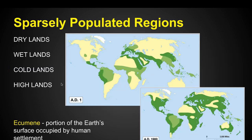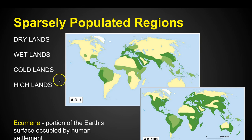Sparsely populated regions where people don't live: typically people don't want to live in areas that are dry like a desert, or in wet places like the marshlands down in Florida — you just can't build a house there. You don't want to live in areas that are cold because you can't grow crops, and you don't want to live in highlands like mountaintops because it's too cold, rocky, and difficult to grow anything.